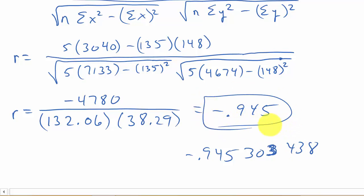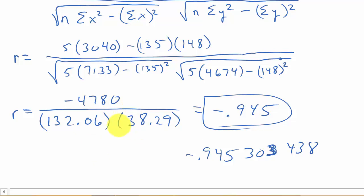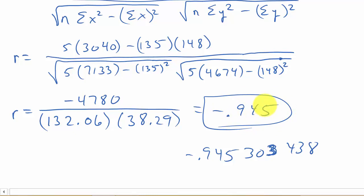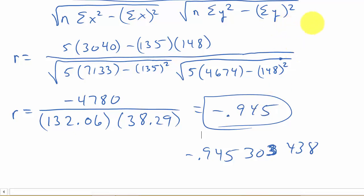So our answer is r approximately negative 0.945. This shows a strong negative correlation. It's close to negative 1, which means the line describes a good relationship between the two variables — and since it's negative, as x increases, y decreases. I hope this helped. Give me a like, subscribe, and check out my other videos. Thanks for watching.